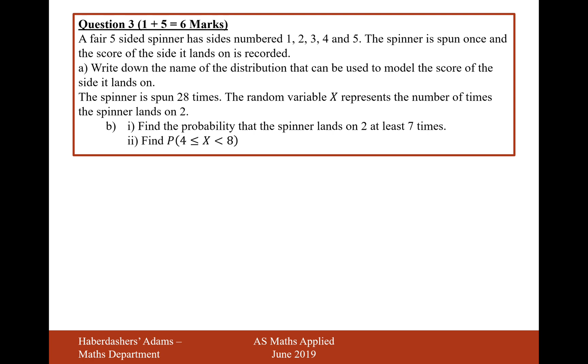A fair five-sided spinner has sides numbered 1, 2, 3, 4 and 5. The spinner is spun once and the score on the side it lands on is recorded. Write down the name of the distribution that can be used to model the score of the side it lands on.